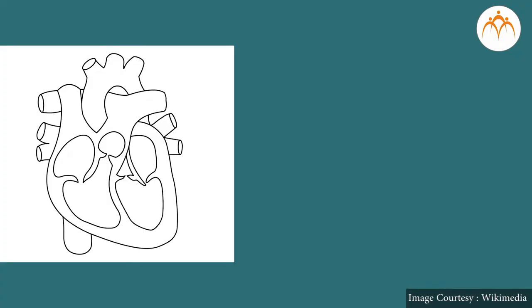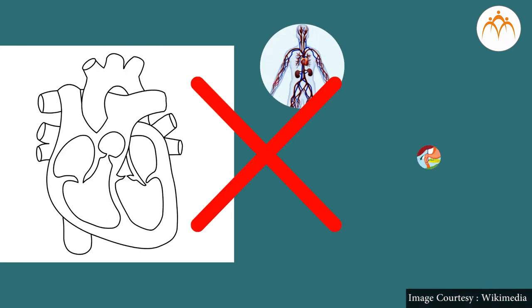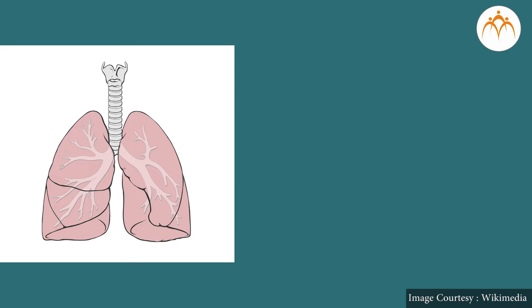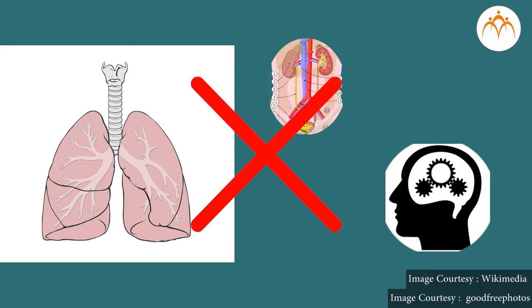Can you imagine what will happen in multicellular organisms if all cells start performing all functions? For example, if the heart is involved in digestion and breathing, or lungs are performing excretion and thinking, there will be a lot of confusion or chaos in the body. Then how do multicellular organisms carry out various body functions?